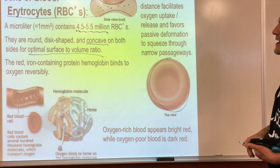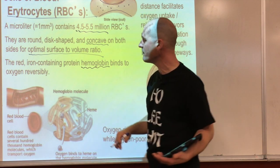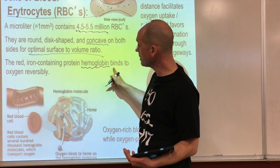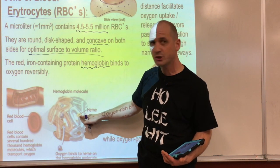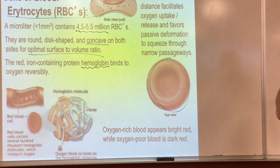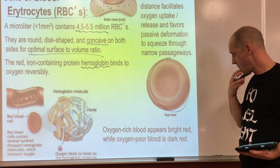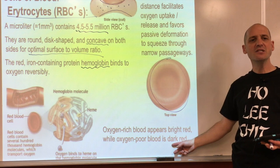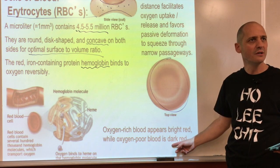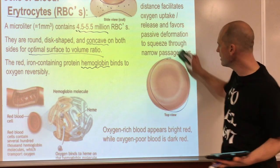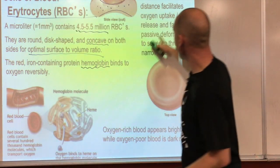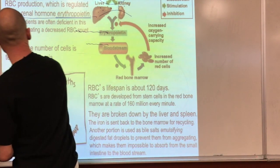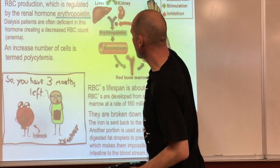If red blood cells were just round, there would be too much volume for the surface. The disc shape is also convenient because they can stack up and go through smaller capillaries in single file. Hemoglobin is the red iron-containing protein that binds reversibly to oxygen - the iron in the heme can attract an oxygen and let it go. Oxygen-rich blood is brighter red; oxygen-poor blood is darker red.